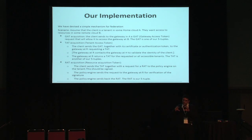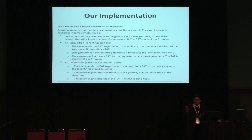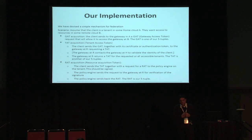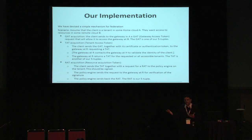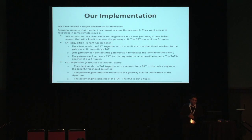There are two clouds and two gateways in the middle. First, the user talks to his gateway asking what remote clouds can be accessed. Once he gets a list of remote clouds, he talks to a remote cloud to find out which tenants and resources can be accessed, and gets back a token representing that. The flow is very similar to the existing Keystone flow.